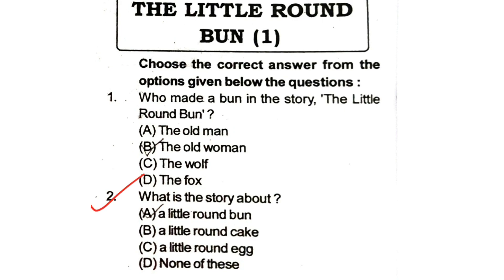Question 2: What is the story about? Where is the little round bun? Options: a little round cake, a little round egg, none of these, or a little round bun. The answer is: a little round bun.